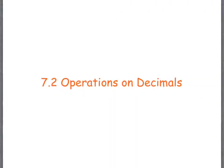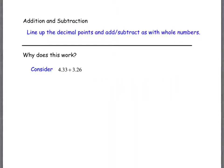Section 7.2 is operations on decimals. We're going to take a look at addition and subtraction and also multiplication and division. Addition and subtraction connects nicely from what we just did in the last section where we were looking at ordering our decimals, and one of the things we talked about is lining them up so that the decimal point occurred in the same location.